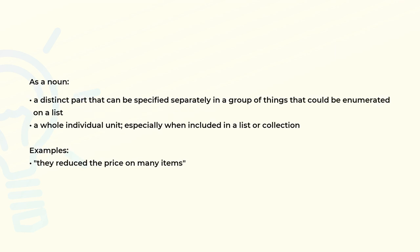As a noun: a distinct part that can be specified separately in a group of things that could be enumerated on a list; a whole individual unit, especially when included in a list or collection. Examples of use: they reduce the price on many items.